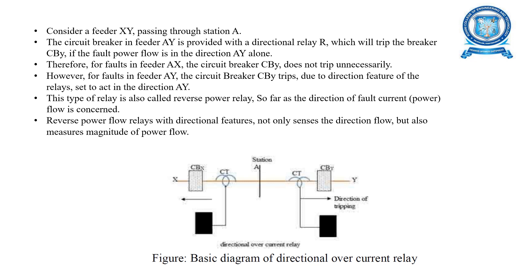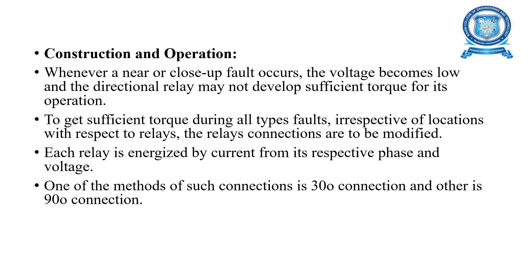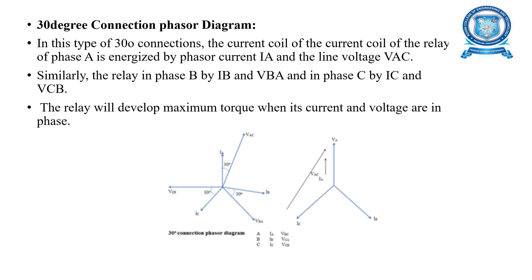For faults in feeder AY, the circuit breaker CBY trips due to the direction feature of the relays. This type of relay is also called a reverse power relay. Regarding construction and operation, whenever a near or close-up fault occurs, voltage becomes low and the directional relay may not develop sufficient torque. Each relay is energized by the current and voltage from its respective phase. Two common connection methods are the 30-degree connection and the 90-degree connection.